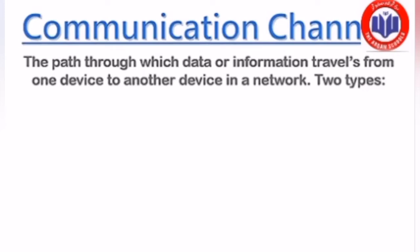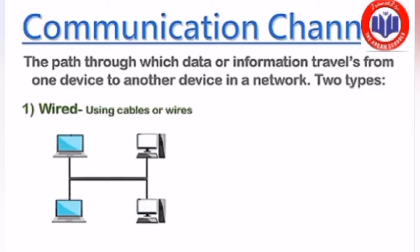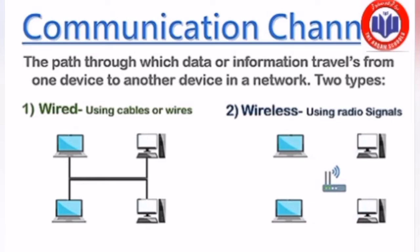The communication channel is the path through which data or information travels from one device to another device in the network. In a network, files are shared through this path. Data or files are transferred through either a wired connection, where cables are used, or a wireless connection, where signals travel through the path.